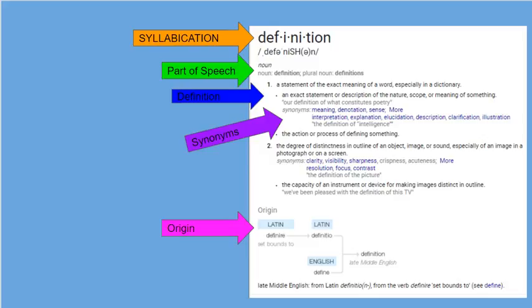Notice how it gives us the syllabication of the word definition. The little dots in between each syllable show us where the syllabication goes. It also gives us the pronunciation right underneath. See how it tells us how to pronounce the word 'definition'? It also tells us parts of speech and gives us a definition.